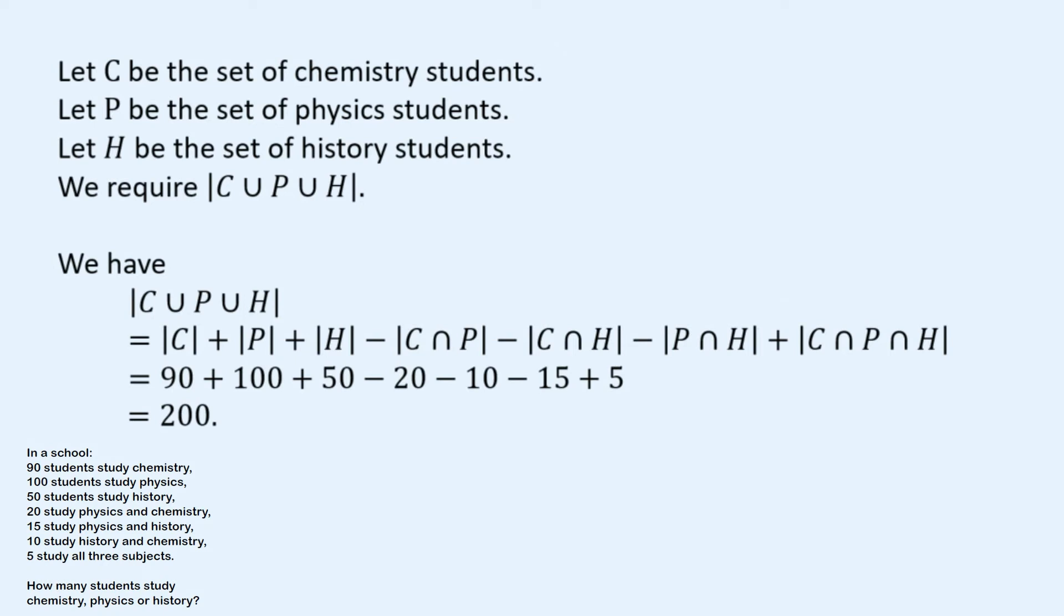So any student that studies chemistry or physics or history. Now here's the inclusion-exclusion formula for three sets. You add C plus P plus H. Now the problem there is that, as we saw before, we've double-counted the intersection between any two sets. So I take off the intersection of chemistry and physics, I take off the intersection of chemistry and history, and I take off the intersection of physics and history.